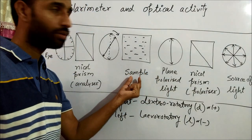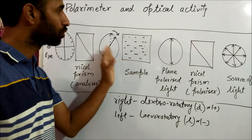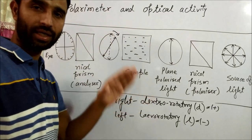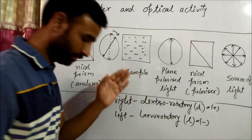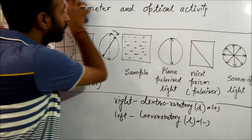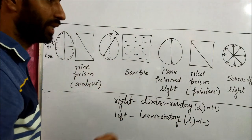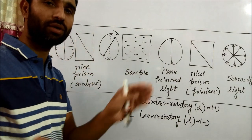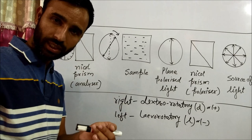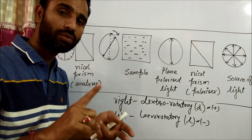If it rotates to the right, it is called an optically active compound. And the condition for optical activity is dissymmetry. There is no plane of symmetry, there should not be axis of symmetry, there should not be center of symmetry.